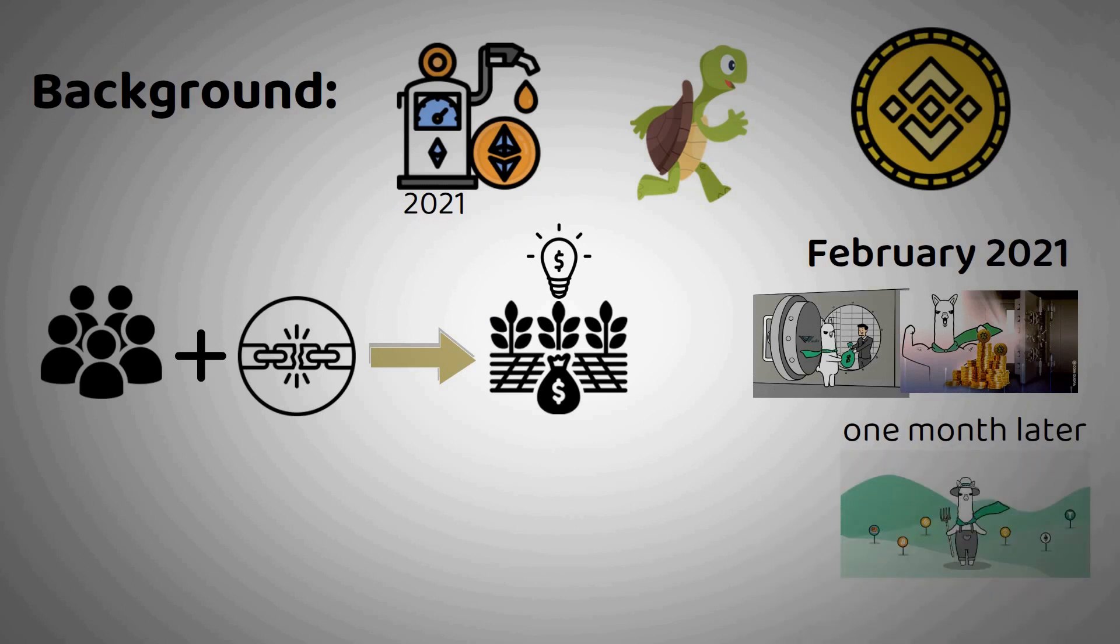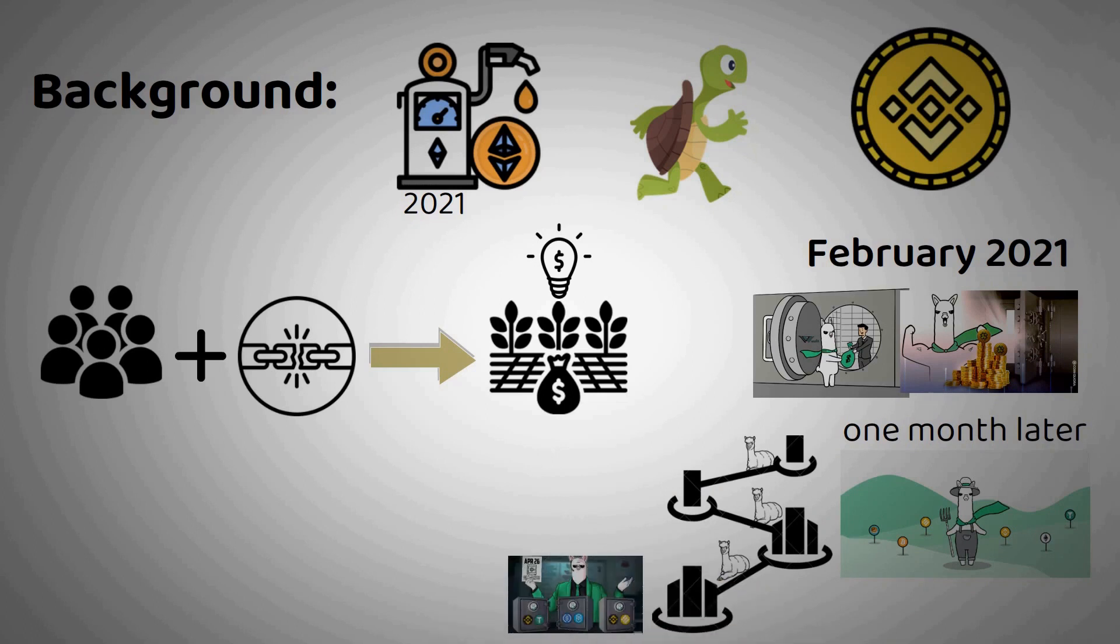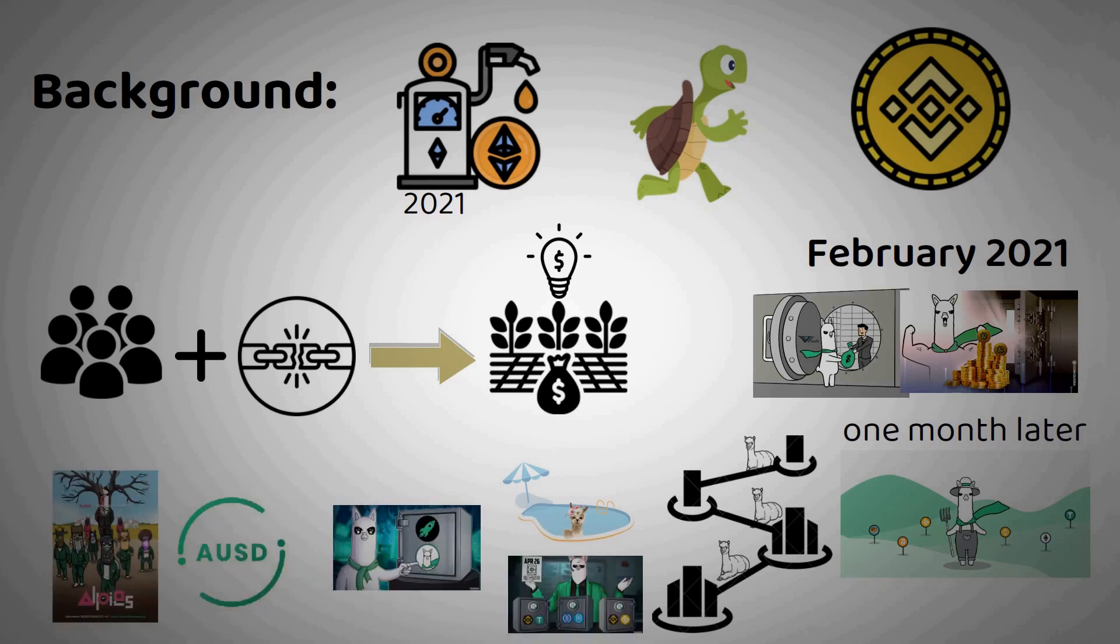Over the following year, Alpaca expanded in several areas. It launched more vaults for lending assets, integrated additional pools for leveraged yield farming, and added features around user protection. Along with expanding to Fantom, the protocol released decentralized governance, an NFT collection, an over-collateralized stablecoin and automated vaults.